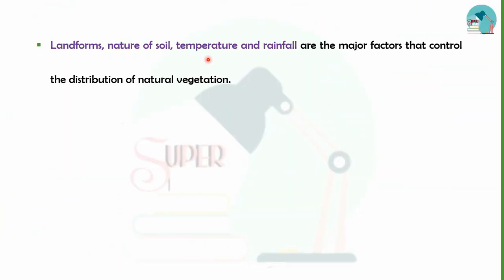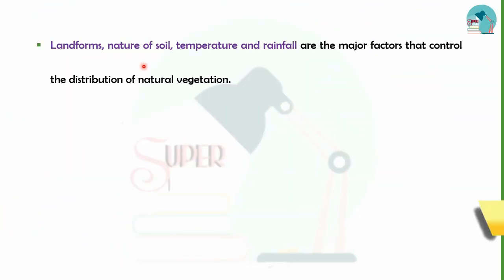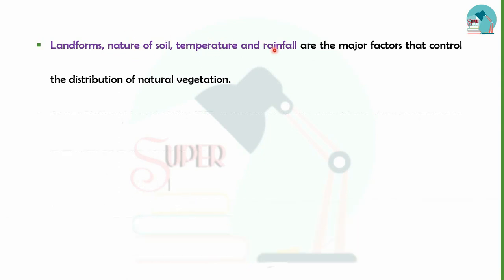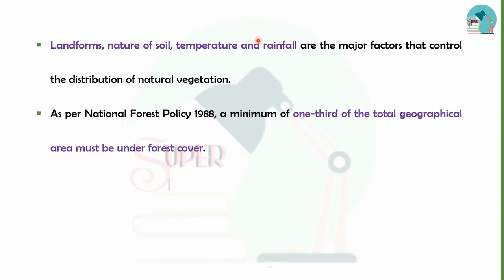The main factors of forest control are landforms, nature of soil, temperature, and rainfall. Based on these factors, you can split different types of forests in this area.